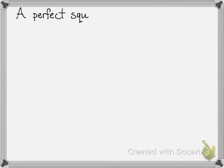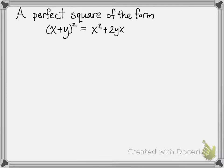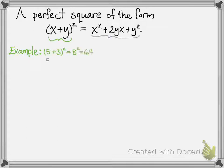A perfect square of the form (x plus y) quantity squared is equal to x squared plus 2yx plus y squared. For example, if we let x equal 5 and y equal 3, then we can see that (5 plus 3) squared is equal to 64, as well as 5 squared plus 2 times 3 times 5 plus 3 squared is also equal to 64.